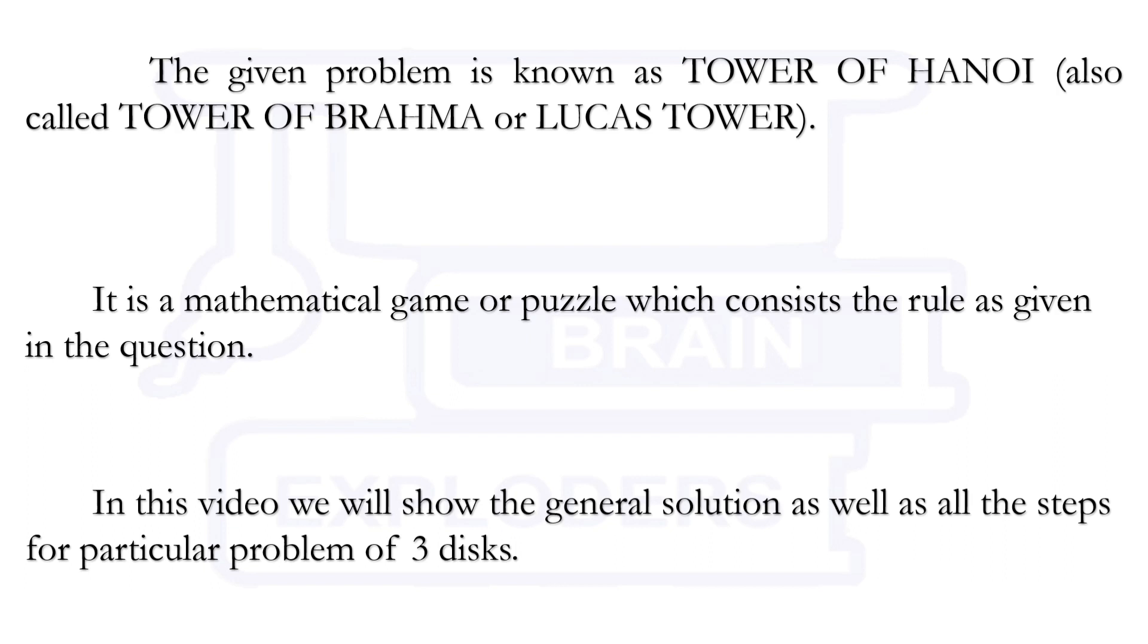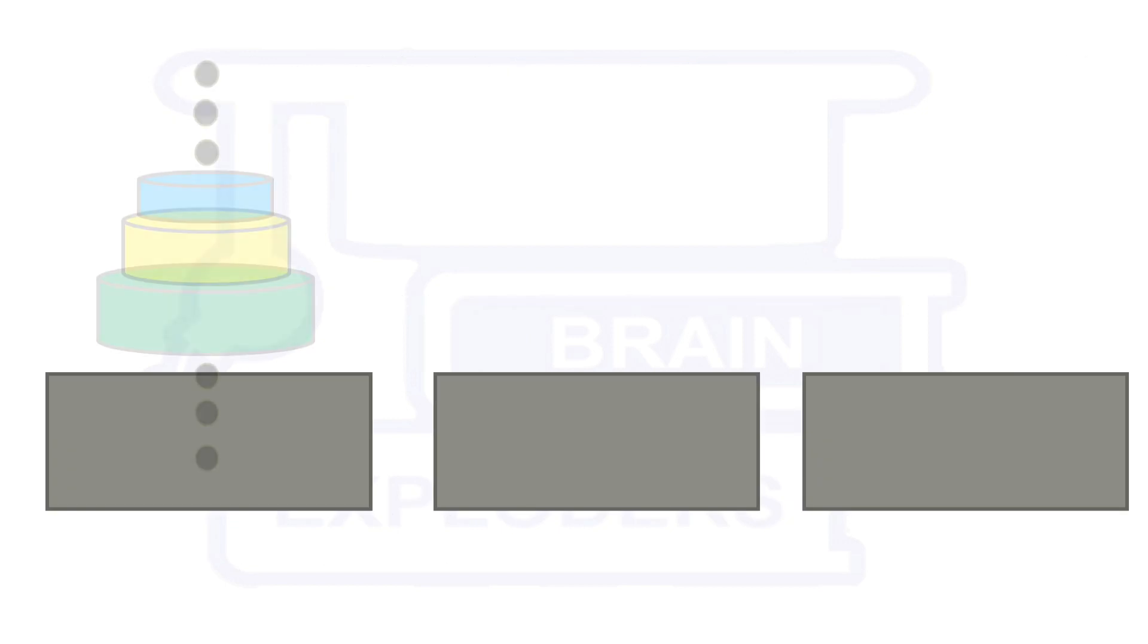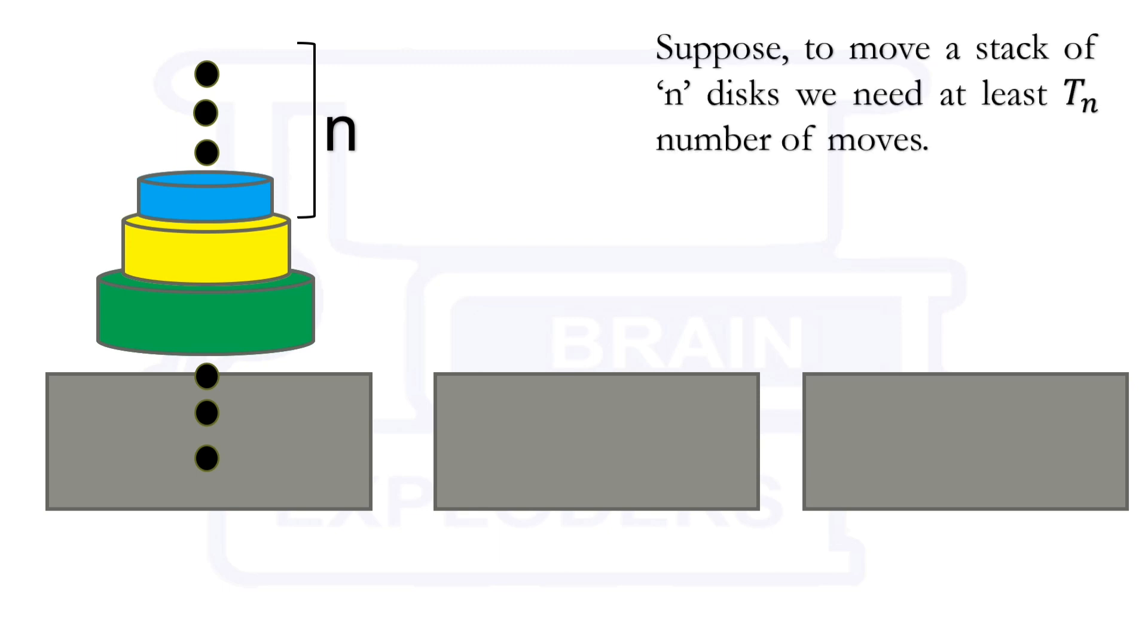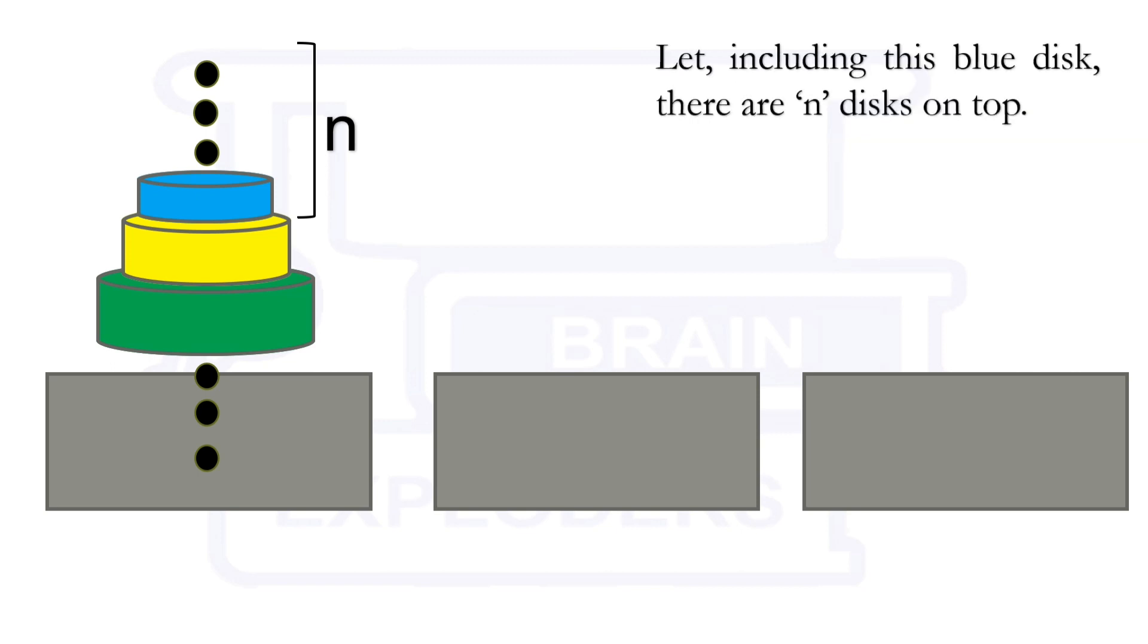So let's come to the main problem. Suppose here we have a stack of disks here including this blue disk. Let us suppose that here we have n disks at the top. Also, let us assume that to move a stack of n disks, we need at least Tn number of moves.